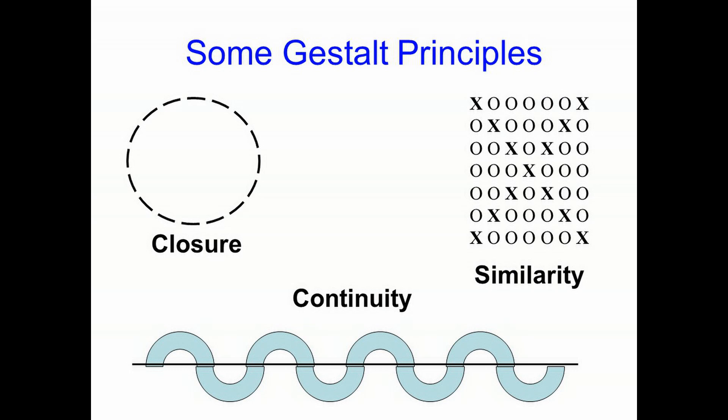I'm showing you just a few gestalt principles. The first involves closure. When you look at the diagram above the word closure on the screen, most people see a circle, but it's actually a series of little arcs drawn in such a way that our brain fills in the gaps and we see it as one unitary object. Likewise, the gestalt principle of similarity is also shown. You're presented with a series of X's and O's, and you're probably seeing a large X made up of small X's — this occurs because those X's are all similar to each other against a background of O's, so you see a large X even though there really isn't one there.